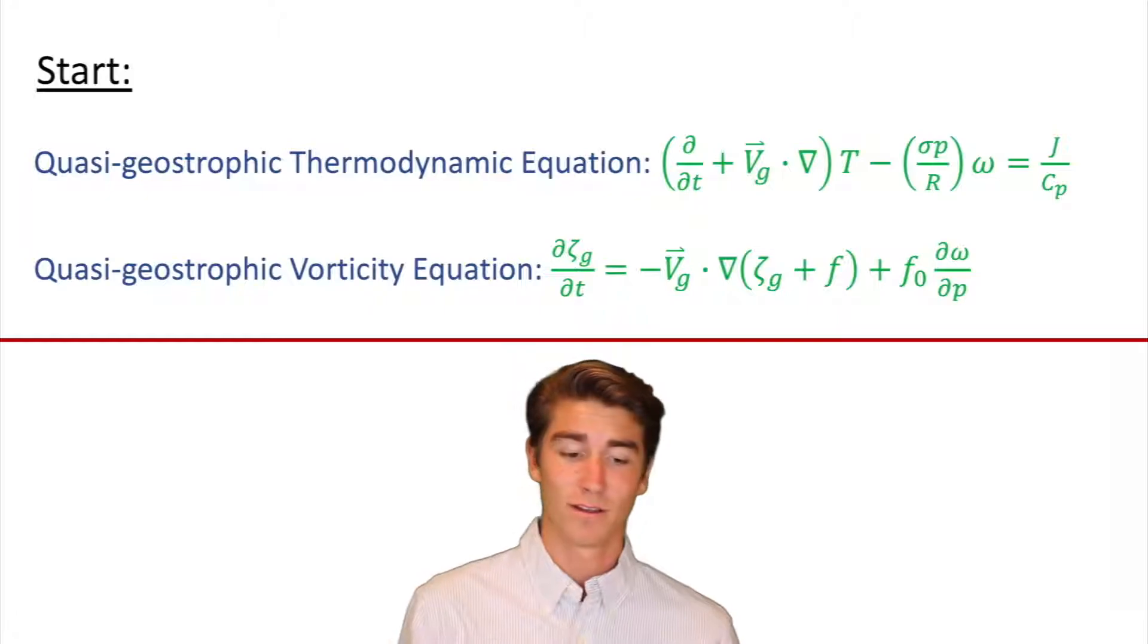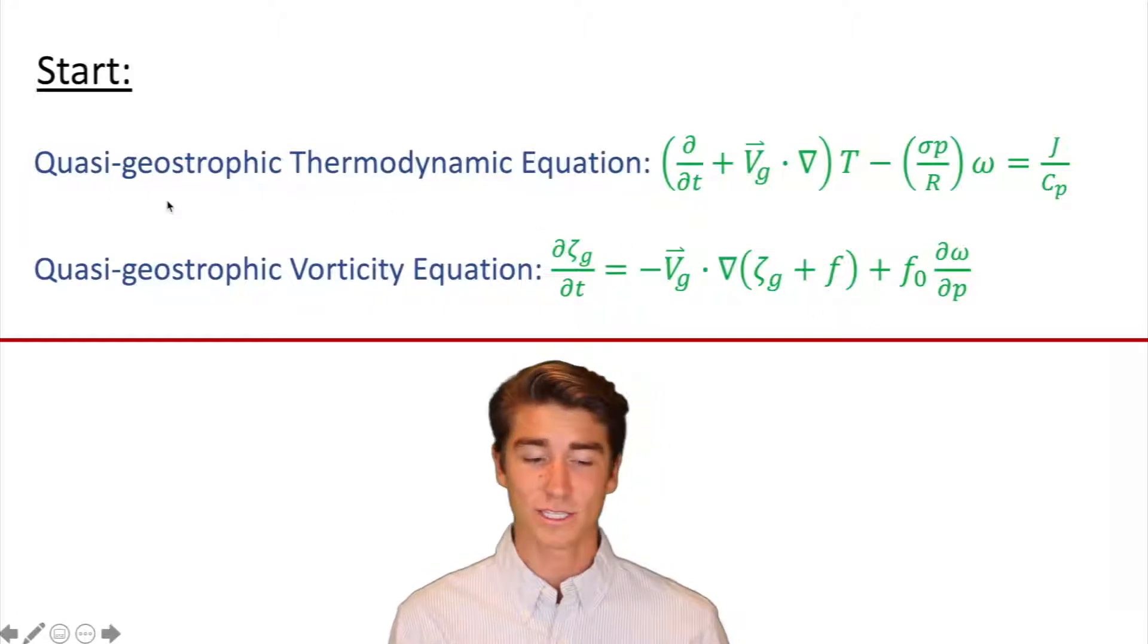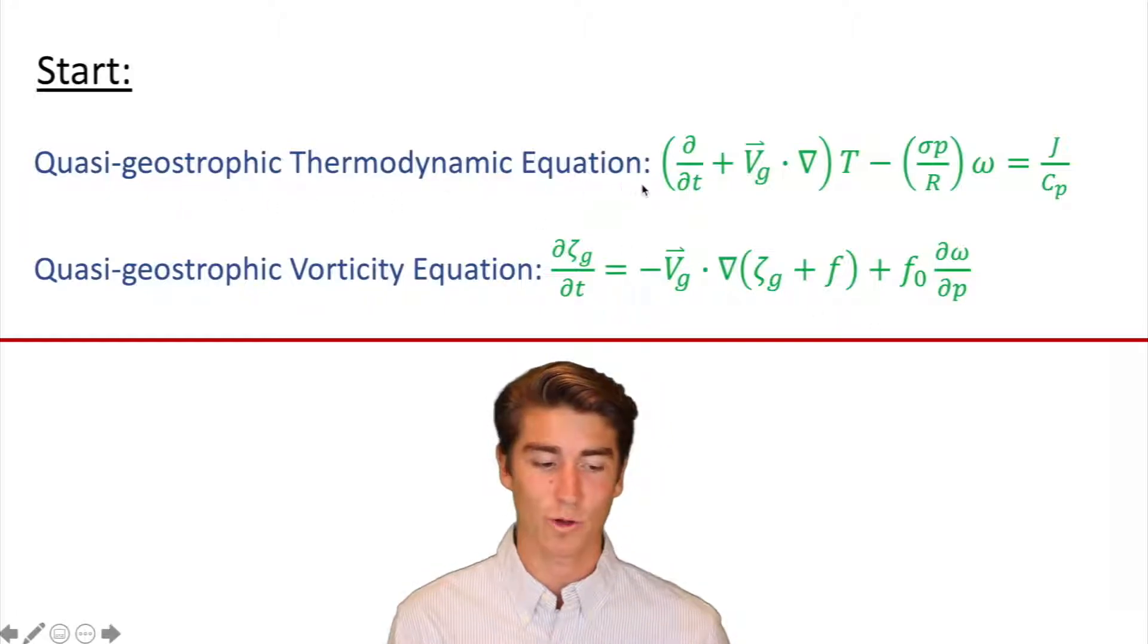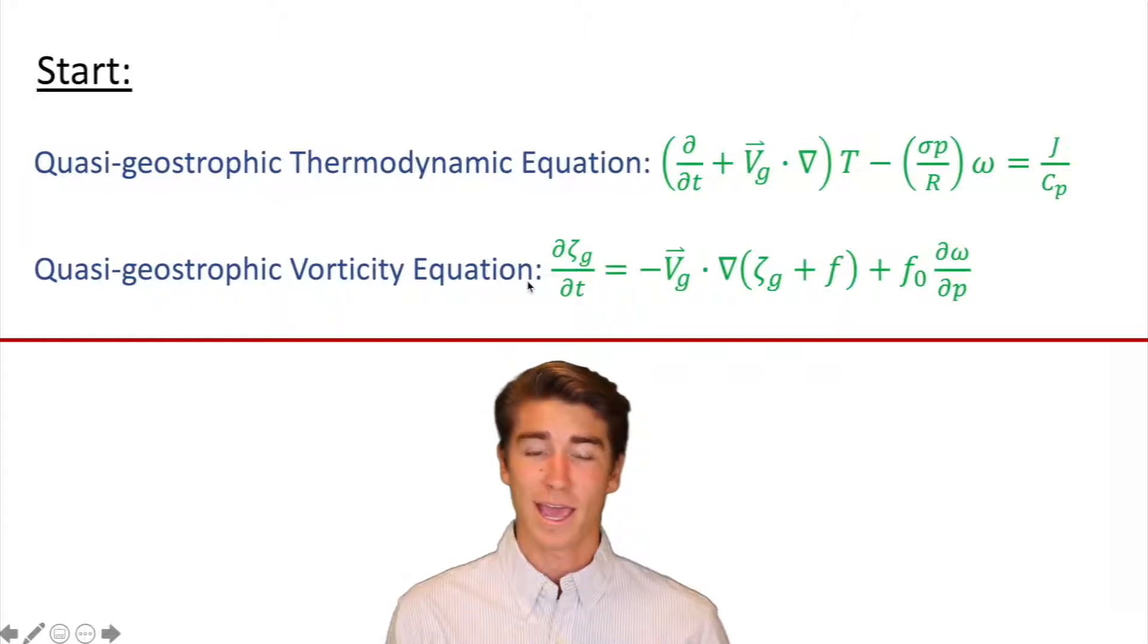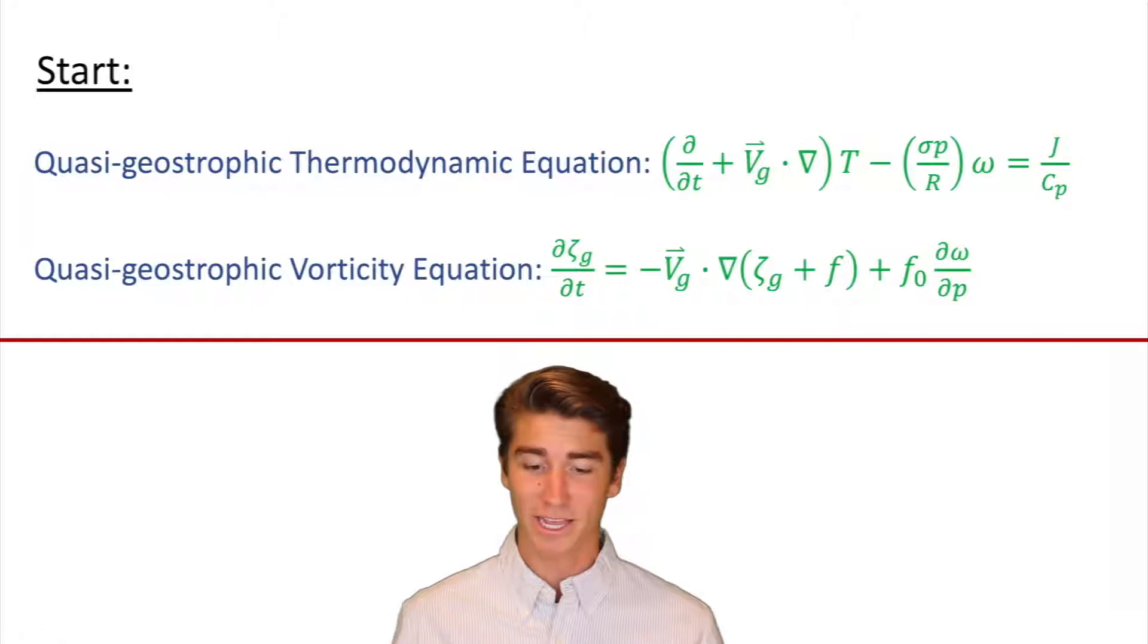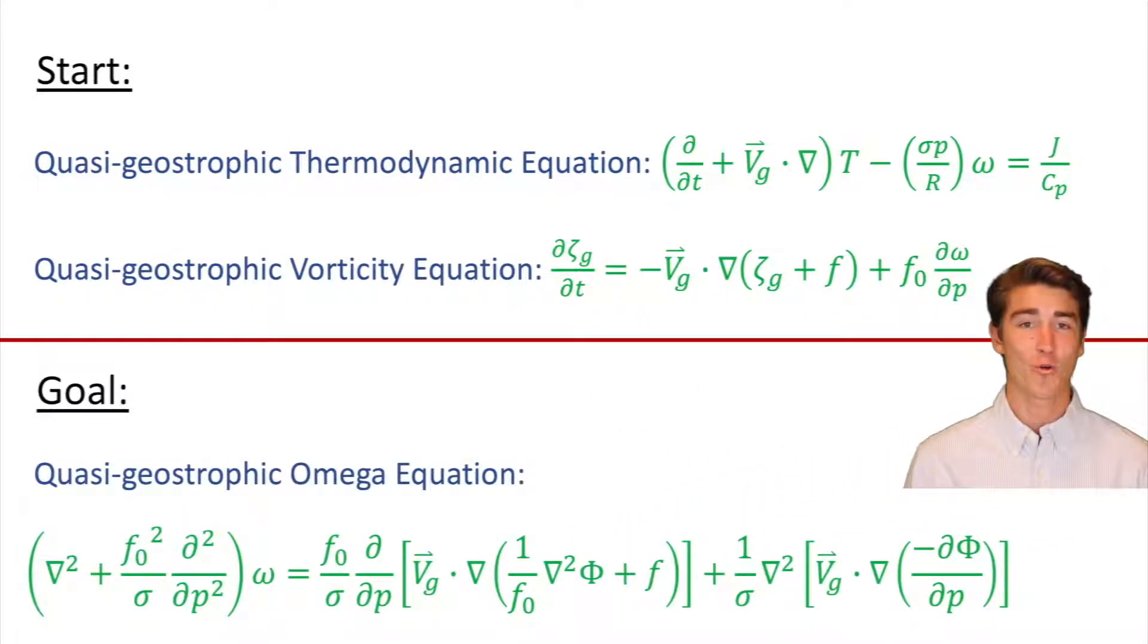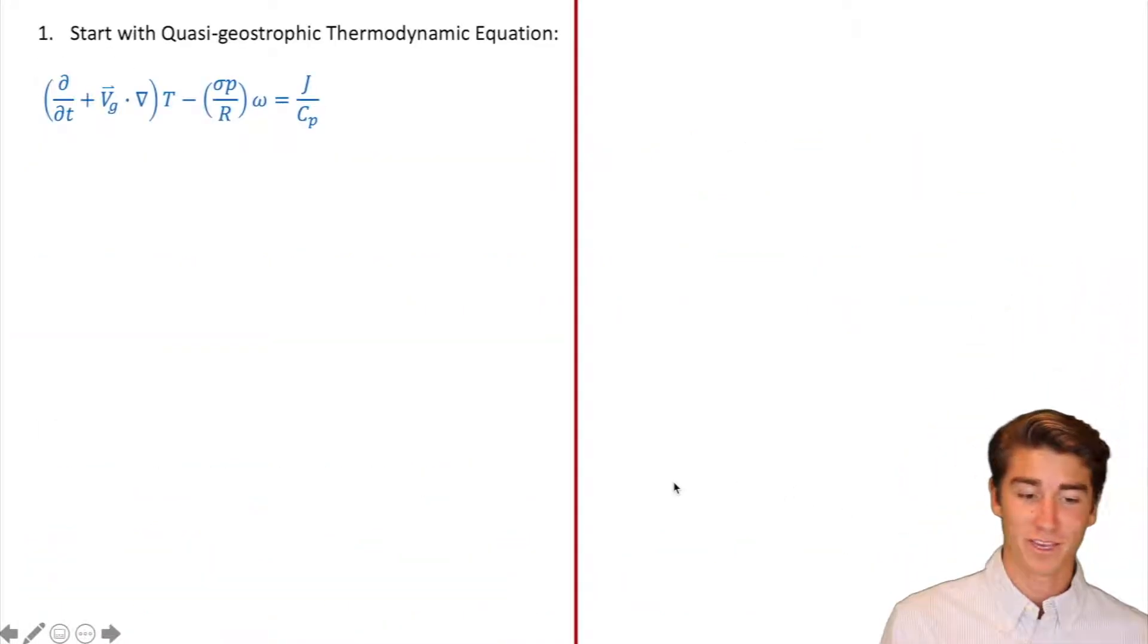So how do we derive it? We're going to start with the quasi-geostrophic thermodynamic equation and the quasi-geostrophic vorticity equation and basically manipulate these in various ways and then combine them together to end up with the quasi-geostrophic Omega Equation. Like I said, you can see a lot of terms and symbols. If you want to actually understand what this equation means, check out my channel for that video.